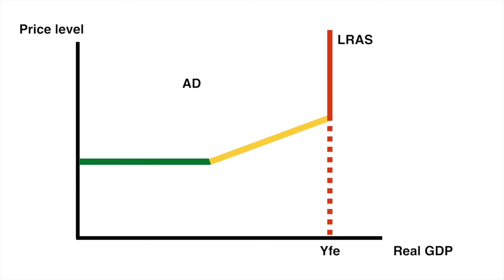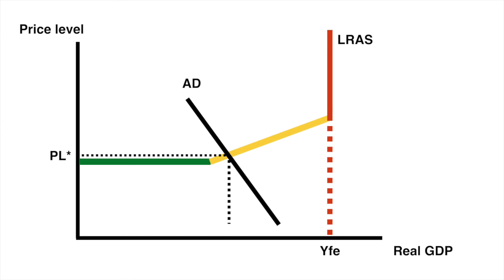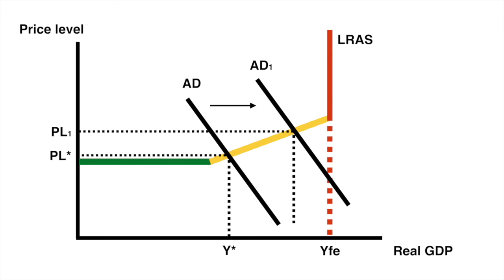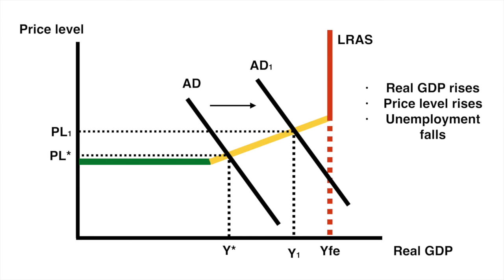If we start the diagram along the upward sloping portion of the LRAS, we can see our initial price level of PL star and output level of Y star. The economy is operating at a point much closer to full employment than before. With lower levels of spare capacity and reduced availability of resources in production, an increase in aggregate demand from AD to AD1 will result in an increase in output to Y1 and an increase in the price level from PL star to PL1. With more output being produced, more workers are needed and unemployment falls.